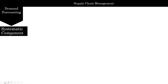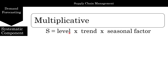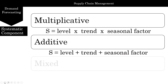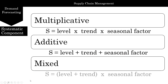The systematic component can be multiplicative, where we multiply level, trend, and seasonal factor. It can be additive, where we add level, trend, and seasonal factor. Or you can have a mixed model, where you add level and trend and multiply by the seasonal factor.